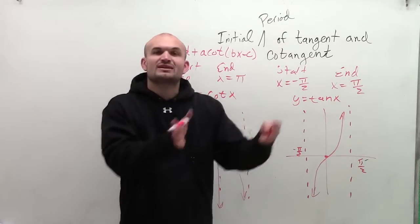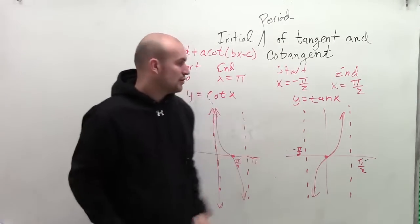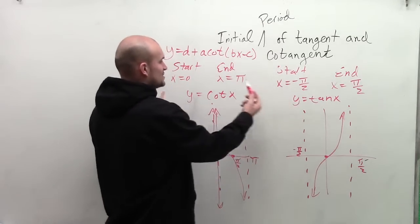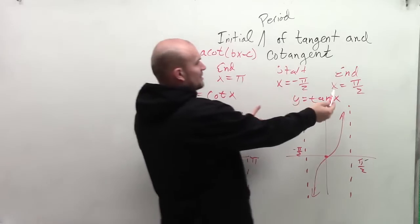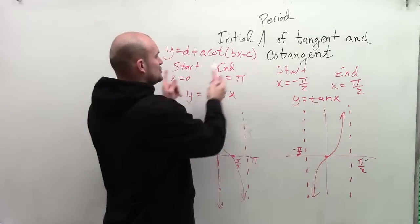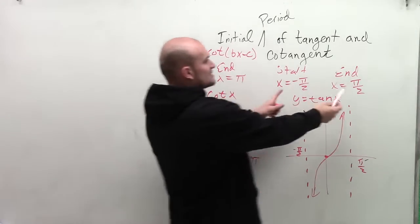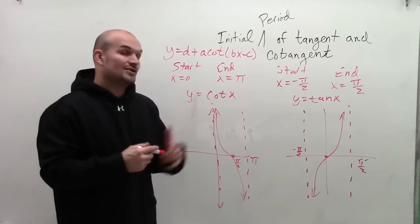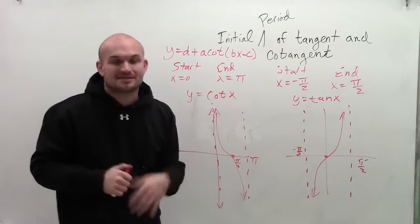Then what you can do is just continuously repeat those two initial periods. But we always want to start with an initial period. And for cotangent and tangent, our initial periods are right up here. Then once you get your transformations, you set them equal to the start and the ends, and you solve for x, and that's going to be your new asymptotes. So there you go. There's the initial periods of tangent and cotangent. Thanks.